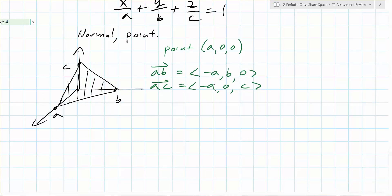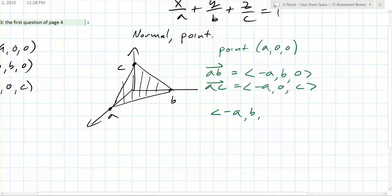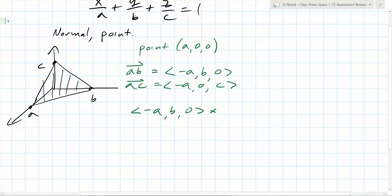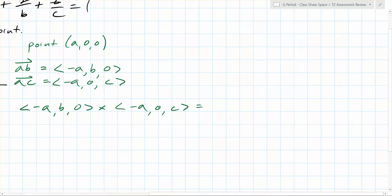So what do you do with those two vectors? You cross them. You do this: (-a, b, 0) cross (-a, 0, c). And do you remember how you cross? What do you have to do? i, j, k determinant. You do i, j, and k.